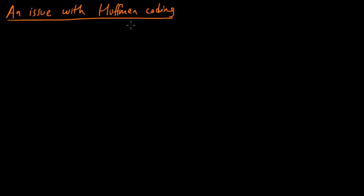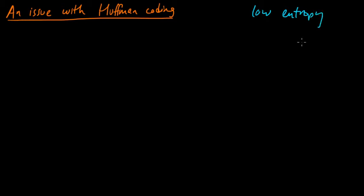Even though Huffman coding is actually optimal, it's only optimal as a symbol code. It turns out that there are some situations in which any symbol code, even an optimal one, is going to perform poorly. In this video, we're going to take a look at an example to illustrate the kinds of situations in which this occurs. Roughly speaking, these are situations in which a source has low entropy.